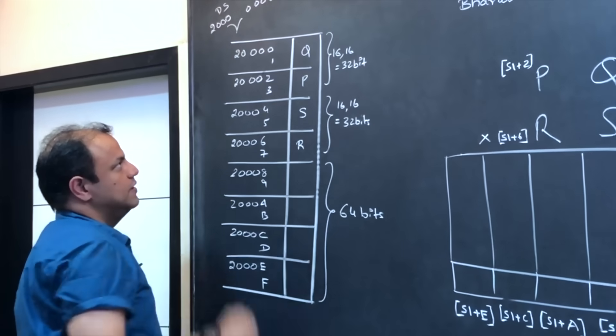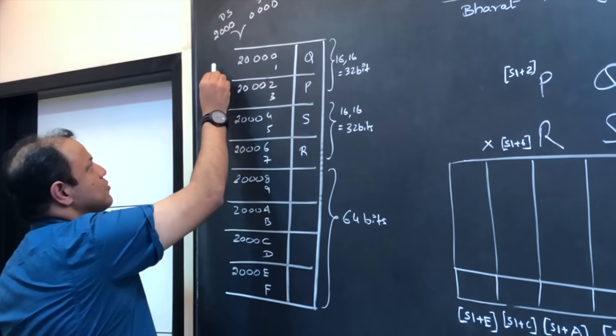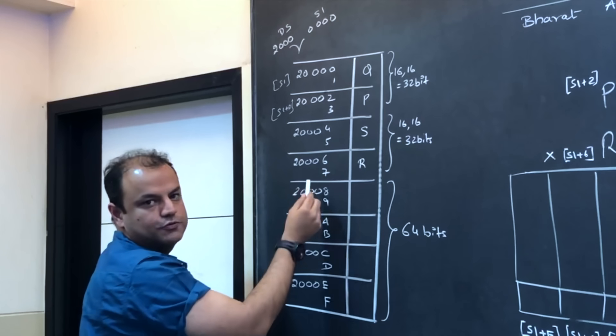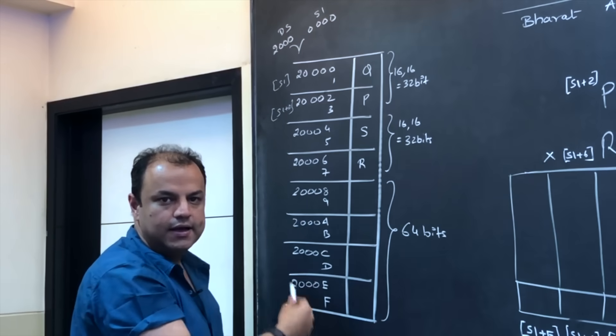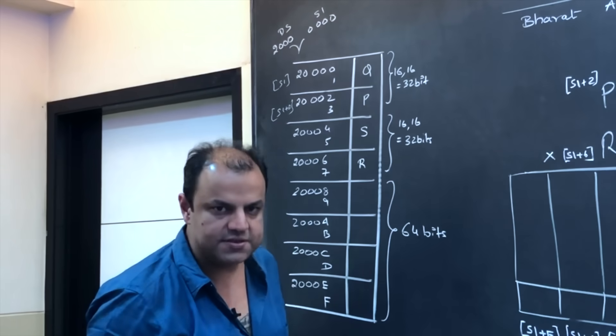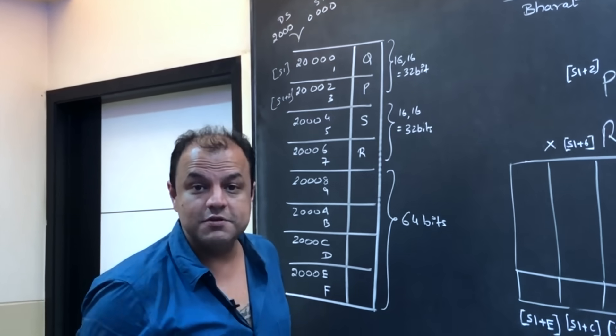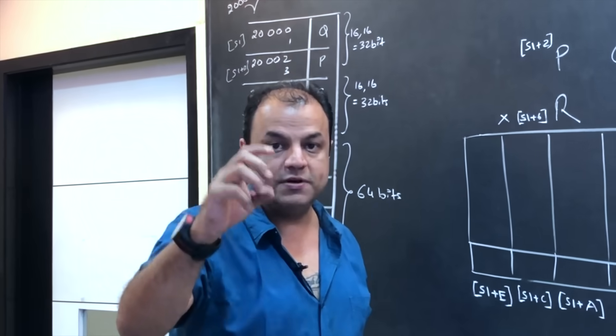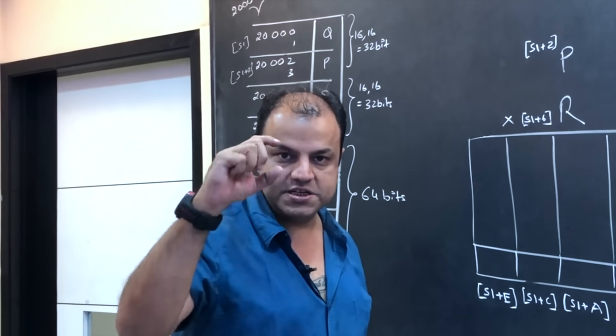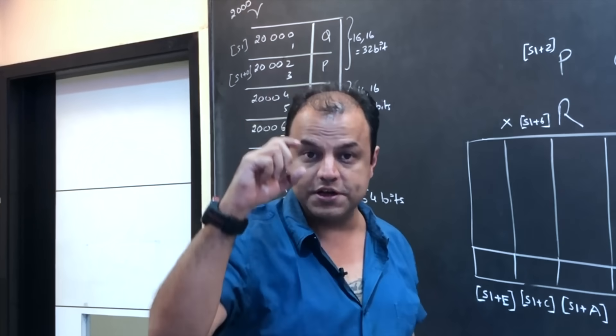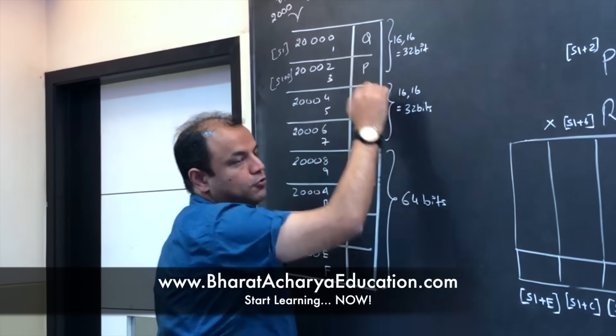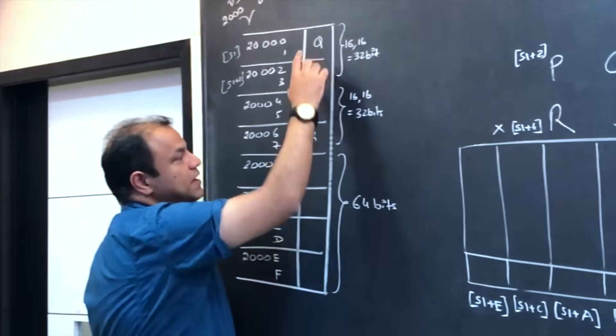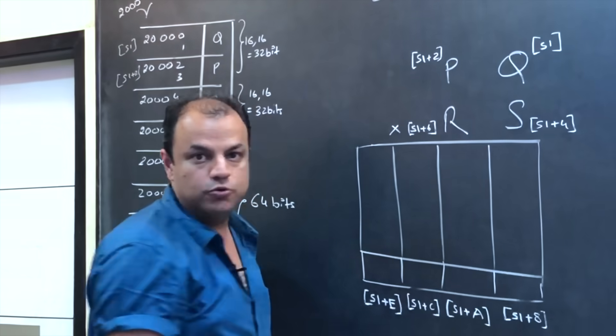This is your data. That means you want to make this area your data segment. So you'll initialize DS with a value 2000. Now this area becomes your data segment and you can access all these locations simply by their offset addresses. We'll initialize SI with 0. So basically, this is location SI. This location becomes SI plus 2 and so on. SI plus 4, SI plus 6, SI plus 8, etc.